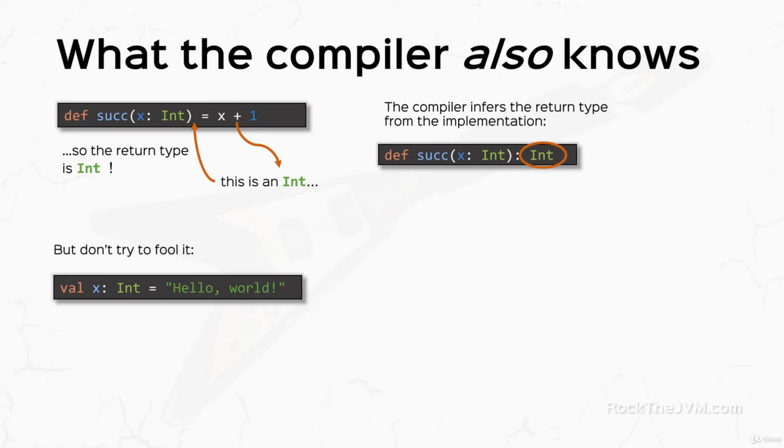But if you do specify a type, make sure that you conform to it on the right-hand side, because otherwise the compiler will buzz you with an error. In this case, I'm declaring a value of type int, but give it a string on the right-hand side.